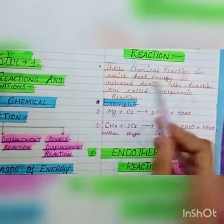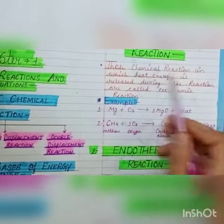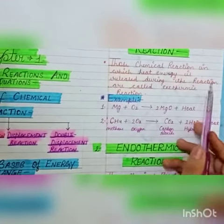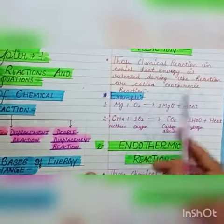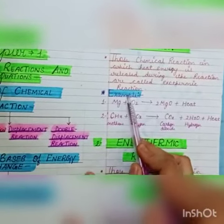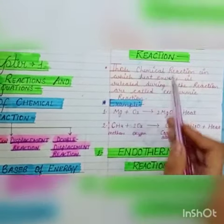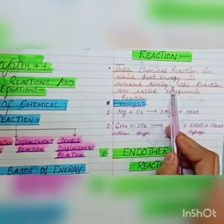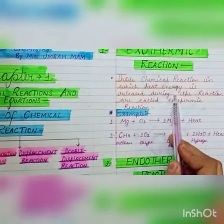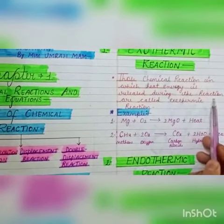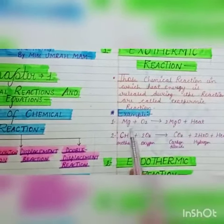Today I will explain these two types of reactions. First, exothermic reaction. Those chemical reactions in which heat energy is released during the reaction are called exothermic reactions — reactions in which heat energy is released.